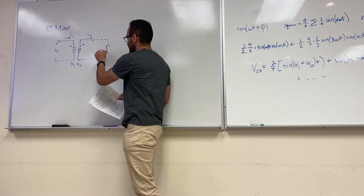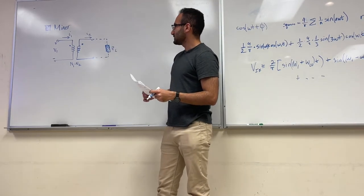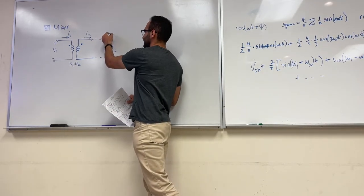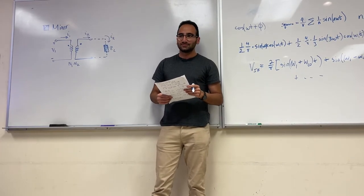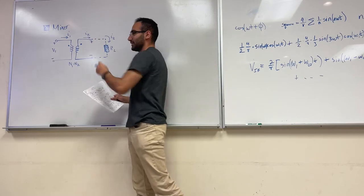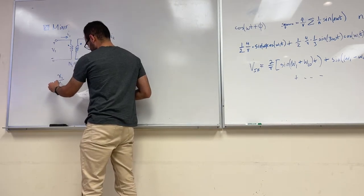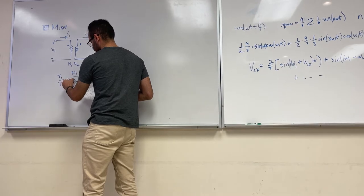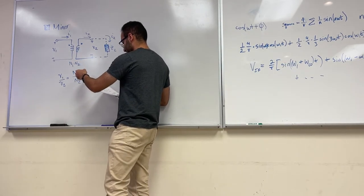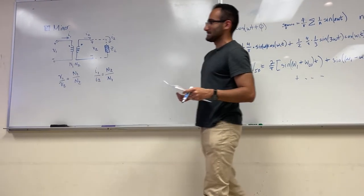Now, if I connect this to a load ZL, what should be the voltage here? Plus on the top — acts like a battery. So this is going to be our V₂. The relationship between V₁ and V₂ is N₁/N₂, which depends on the ratio of the turns. And I₁/I₂ will be N₂/N₁. Please keep this in mind for the rest of your career — so you won't be scared anymore.